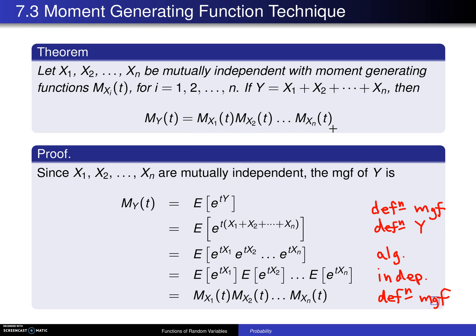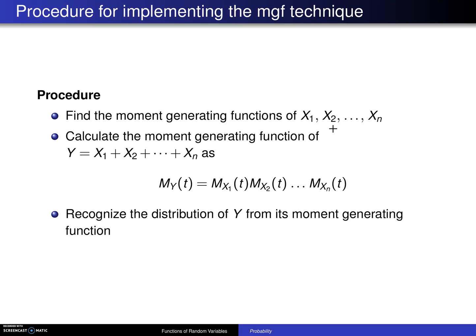This theorem gives us a procedure for determining the distribution of a sum, and it is as follows. Find the moment generating functions of each one of the X's. Step 2: Calculate the moment generating function of their sum, as M_Y(t) is the product of their moment generating functions.